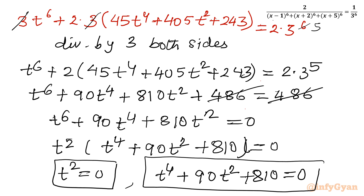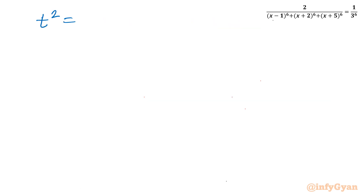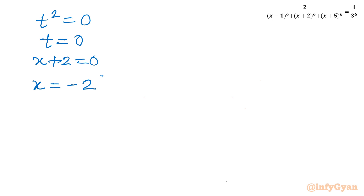From t² equals 0, we get t equals 0. And since t was our substitution x plus 2, we have x plus 2 equals 0, so x equals negative 2. So one real solution is confirmed.